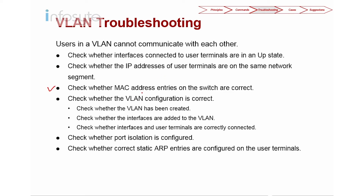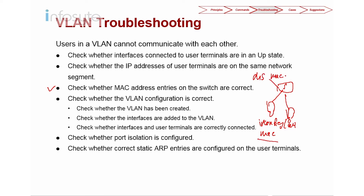Third, check whether the MAC address entry on the switch is correct. Assuming you have a switch and a user connected to it, you do an ipconfig /all and check the MAC address. The MAC address shown there and when you do a display MAC address on the switch are supposed to be the same. If it's not the same, you need to find out why.